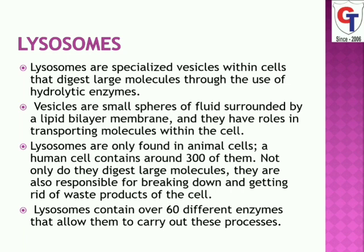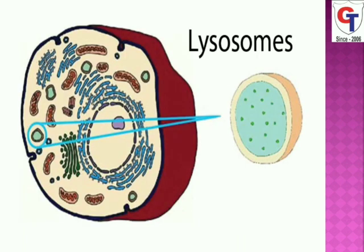Lysosomes are cell organelles only present in the eukaryotic animal cell, except mammalian RBCs. They originate from the Golgi apparatus. They are single membrane-bounded bodies, rounded, elliptical, or irregular in shape. The term lysosome was coined by de Duve in 1955. Lysosomes are called the suicide bag because they contain hydrolytic enzymes that help digest extra cell organelles — a process called autophagy.